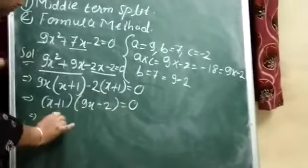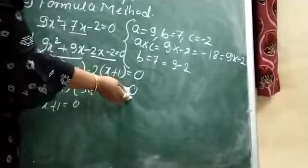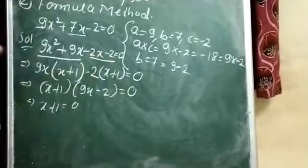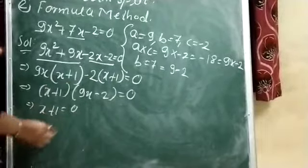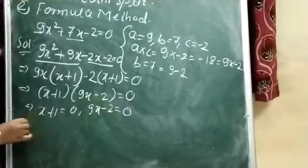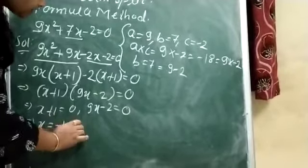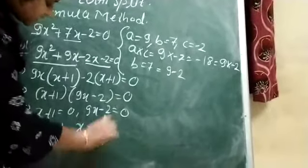Now, x + 1 = 0. I am equating x + 1 with 0 and 9x - 2 with 0. That means x + 1 = 0, and 9x - 2 = 0. Here, x = -1. And here, x = 2/9.